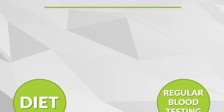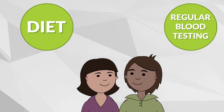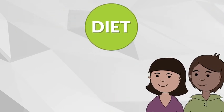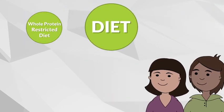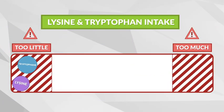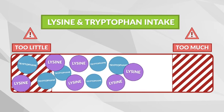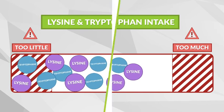You can manage GA1 through your baby's diet and regular blood testing. There are two main components to managing GA1 through diet: a whole protein restricted diet and a special metabolic formula. Even though lysine and tryptophan are dangerous for someone with GA1, they are essential for normal development. A limited and controlled amount must be taken daily.